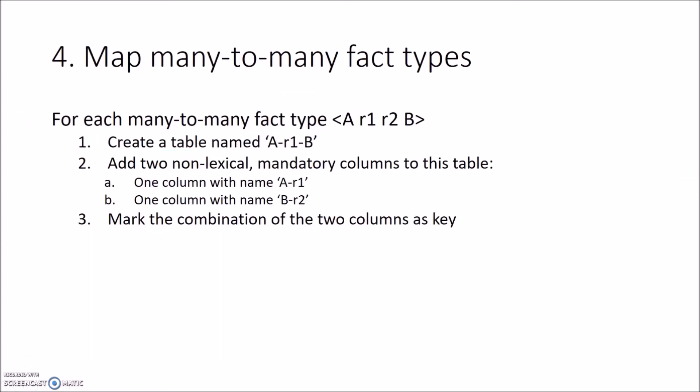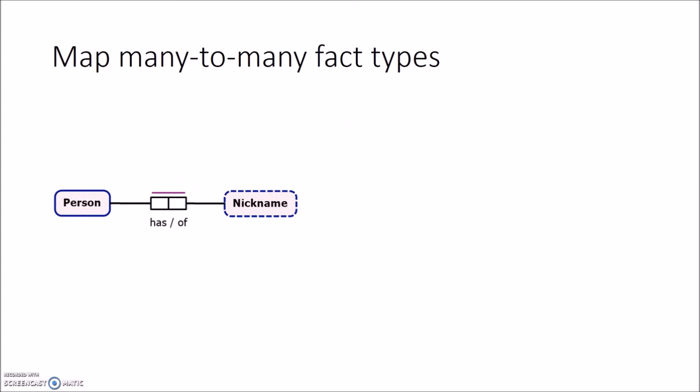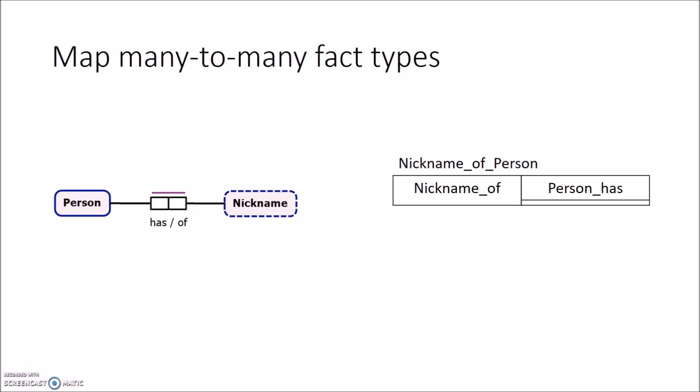Now we need to map many-to-many fact types. For each many-to-many fact type A-R1-R2-B, create a table named A-R1-B, then add two non-lexical mandatory columns — one with name A-R1 and one with B-R2 — and mark the combination of the two columns as candidate key. In this example, a person can have many nicknames and a nickname can be held by many persons, so this is a many-to-many fact type. We add a table called 'nickname of person', add a column for 'nickname' and for 'person', then mark the two columns as candidate key.